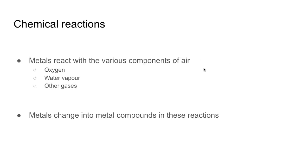Why does corrosion happen? It happens due to the metal's exposure to the environment. We have already studied that metals react with various substances — they react with oxygen, water, and other compounds. When the metals are exposed to air, which is a mixture of gases present around planet Earth, we think of air in the context of corrosion as having three main components: oxygen, water vapor, and other gases.